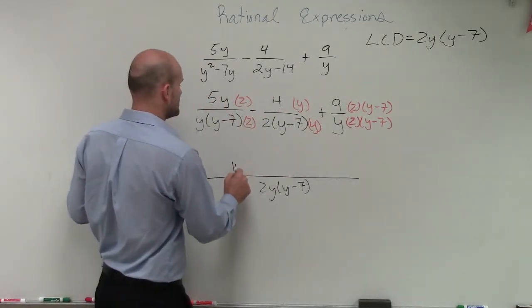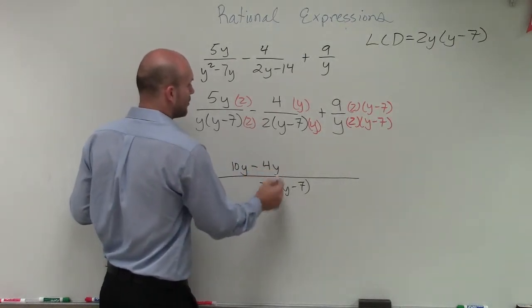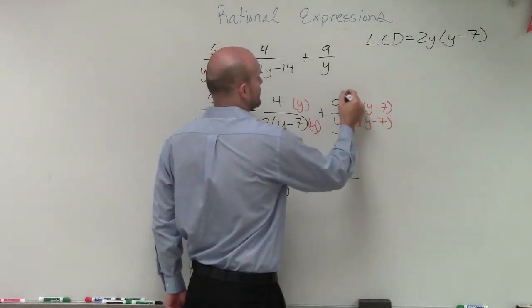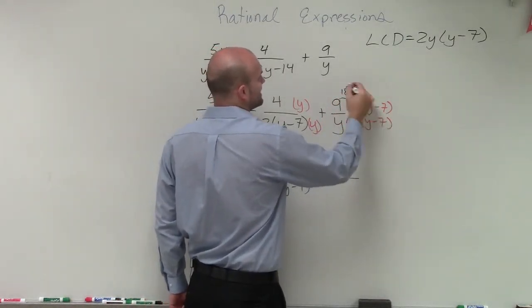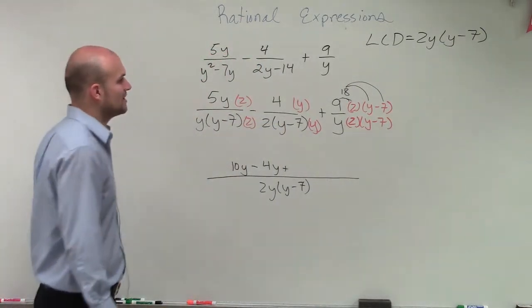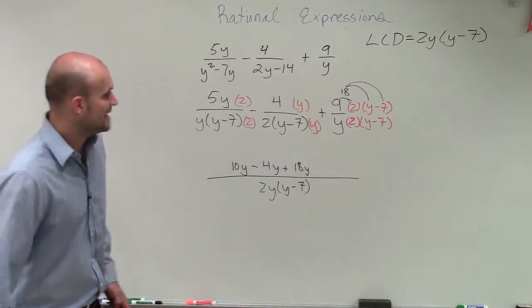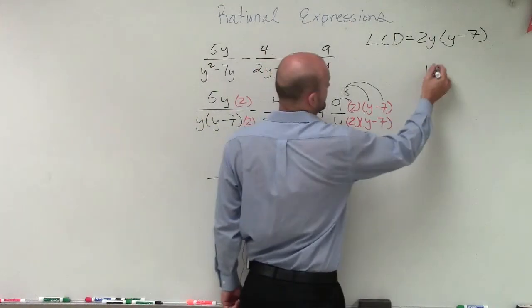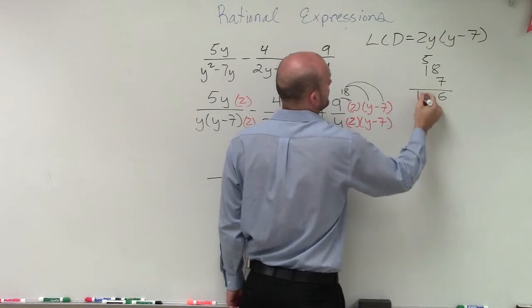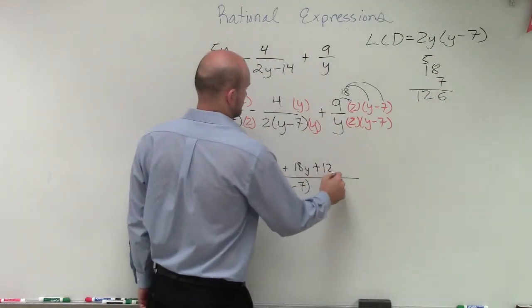So I have 5y times 2, which is 10y, minus 4 times y, which is 4y, plus, now I'm going to do a little work with 4. We have 9 times 2, which is 18. Then I need to apply the 18 in distributive property to both of my terms in my binomials. So I have 18 times y, which is 18y, and then I have 18 times 7. Let me just do the work over here again. So I have 126.